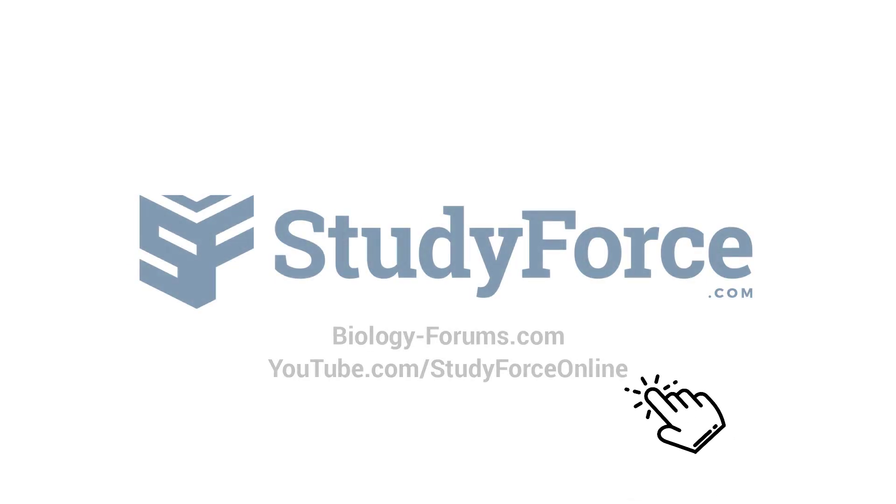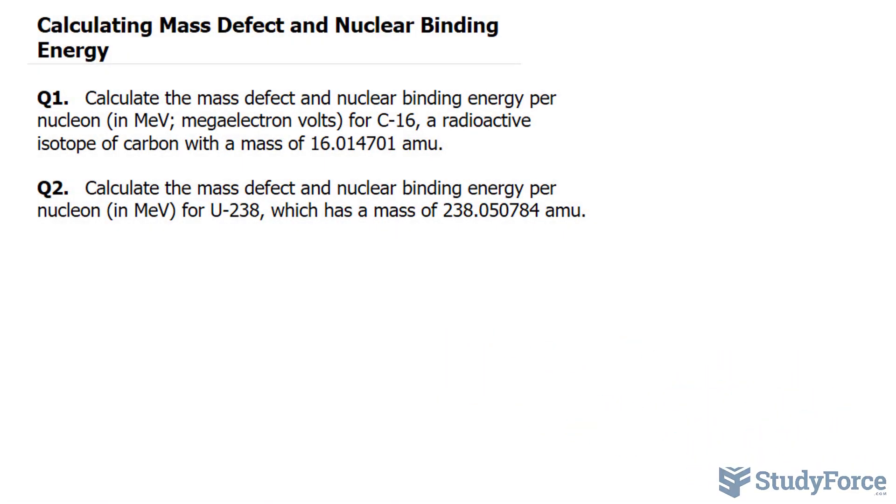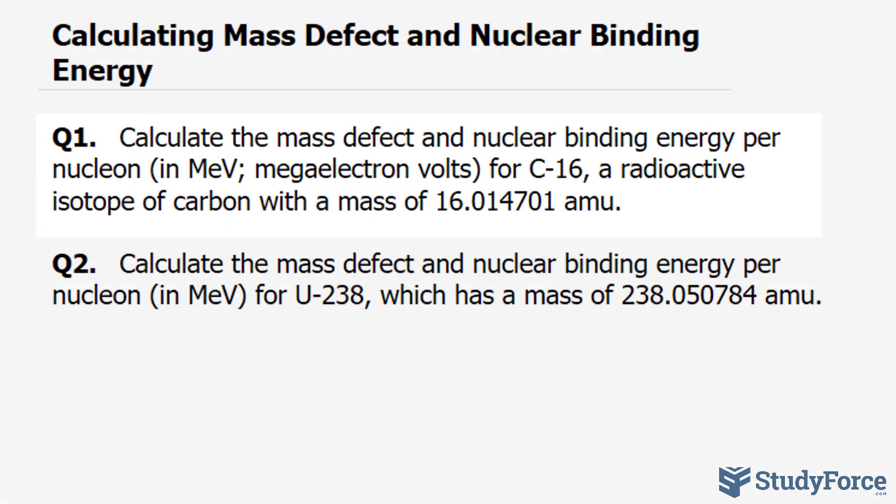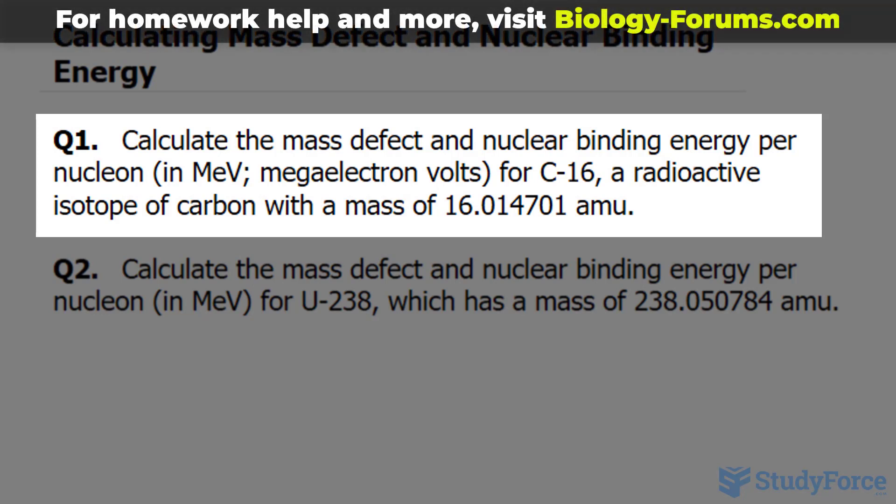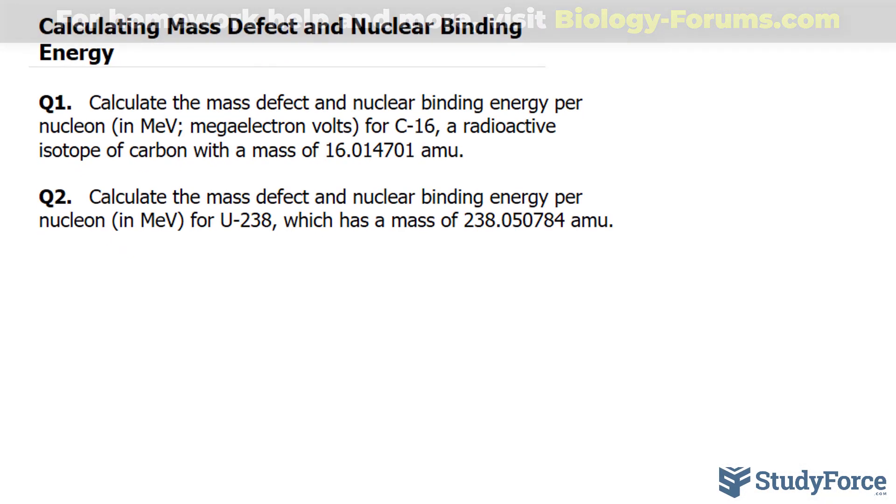In this lesson, I'll show you how to calculate mass defect and nuclear binding energy. The first question reads, calculate the mass defect and nuclear binding energy per nucleon in mega electron volts for carbon-16, a radioactive isotope of carbon with a mass of 16.014701 atomic mass units.